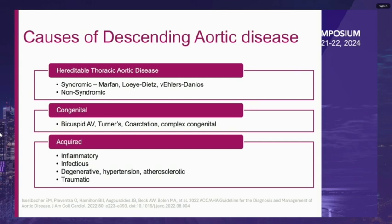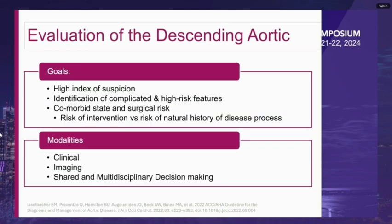Causes of descending aortic disease can broadly be categorized into heritable thoracic aortic disease, congenital diseases, and acquired. When evaluating diseases of the descending aorta, certain goals should be kept in mind. The first is to have a high index of suspicion — diseases are often asymptomatic, or if symptomatic, can present with a broad array of signs and symptoms. Secondly, it is important to identify complicated and high-risk features, and finally to quantify the comorbid state and overall surgical risk.